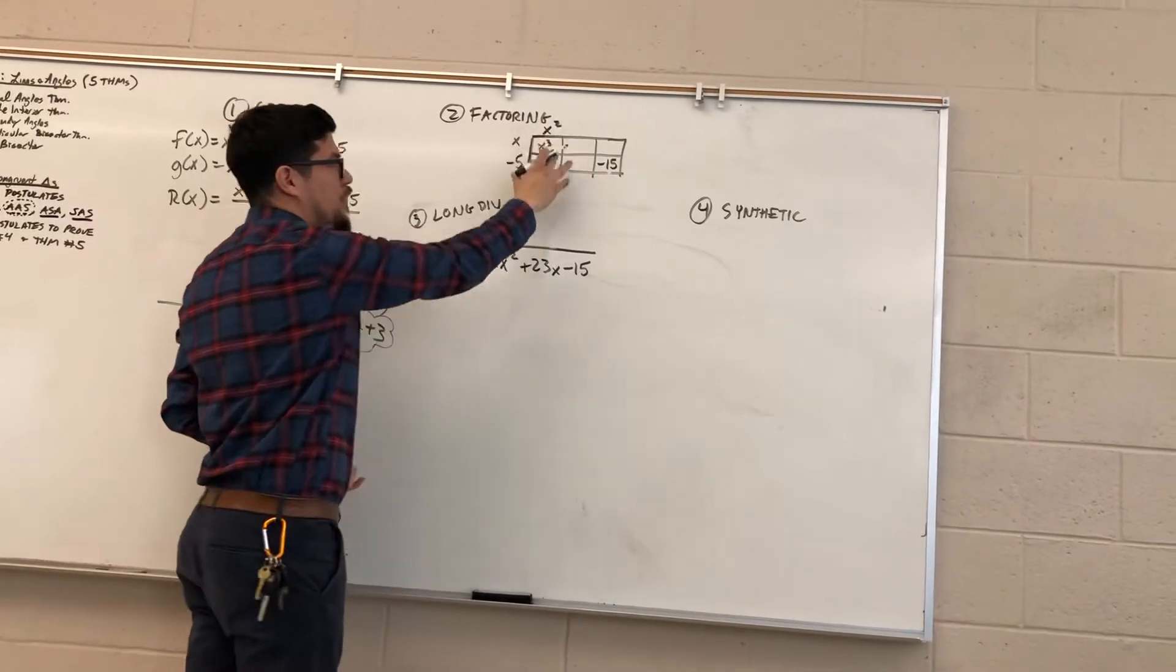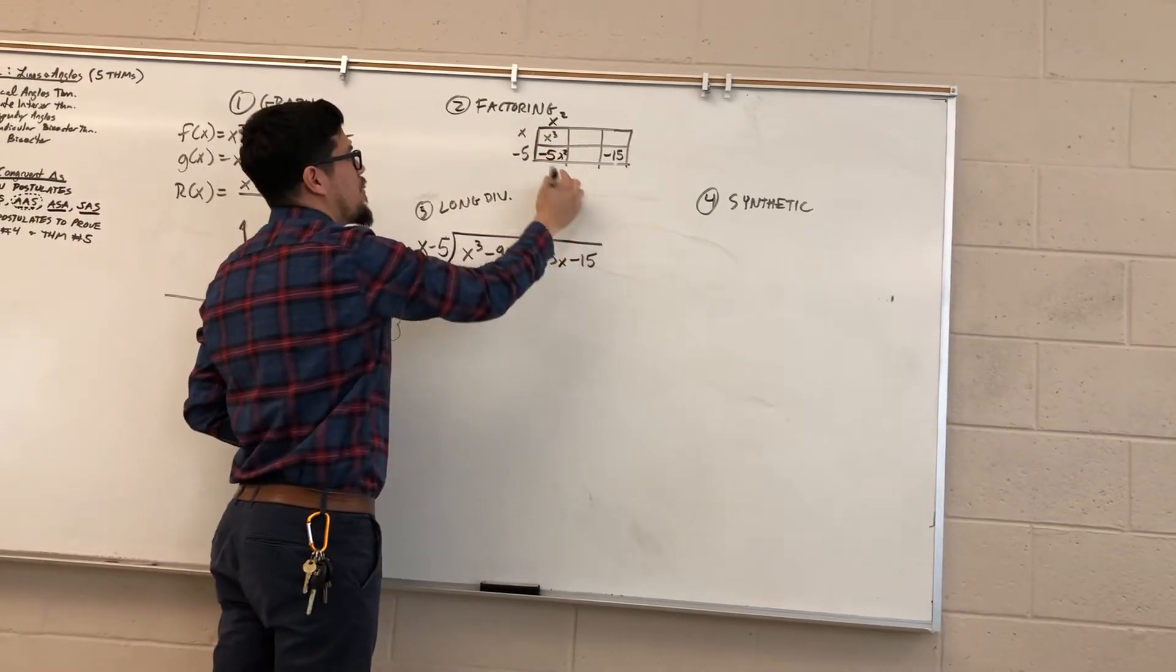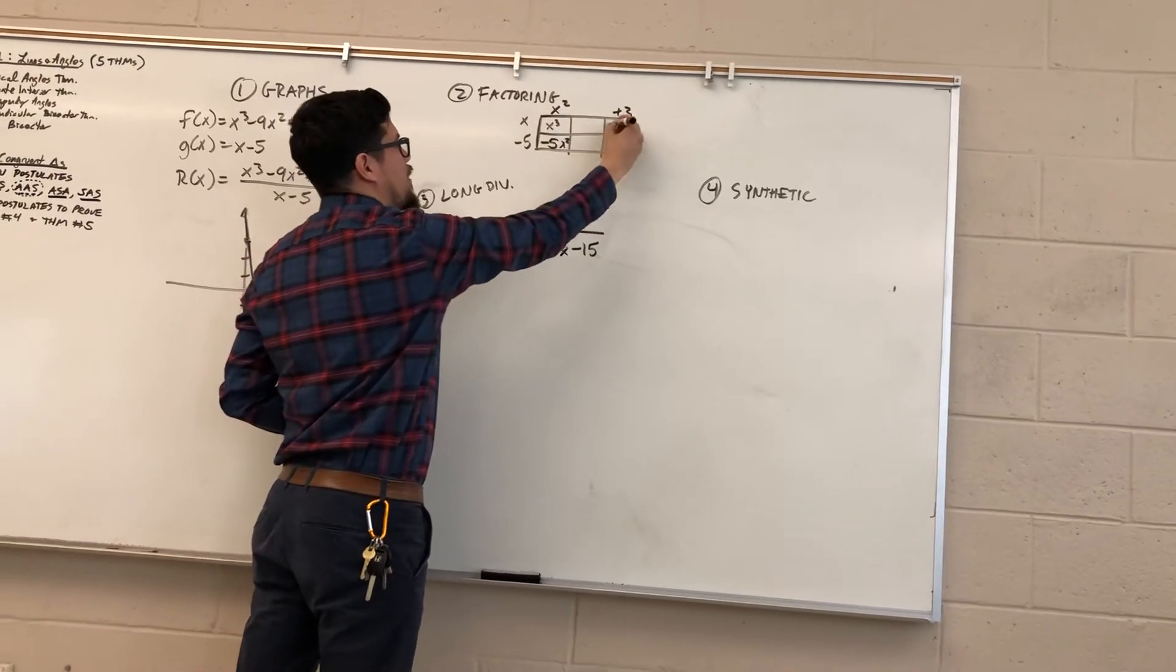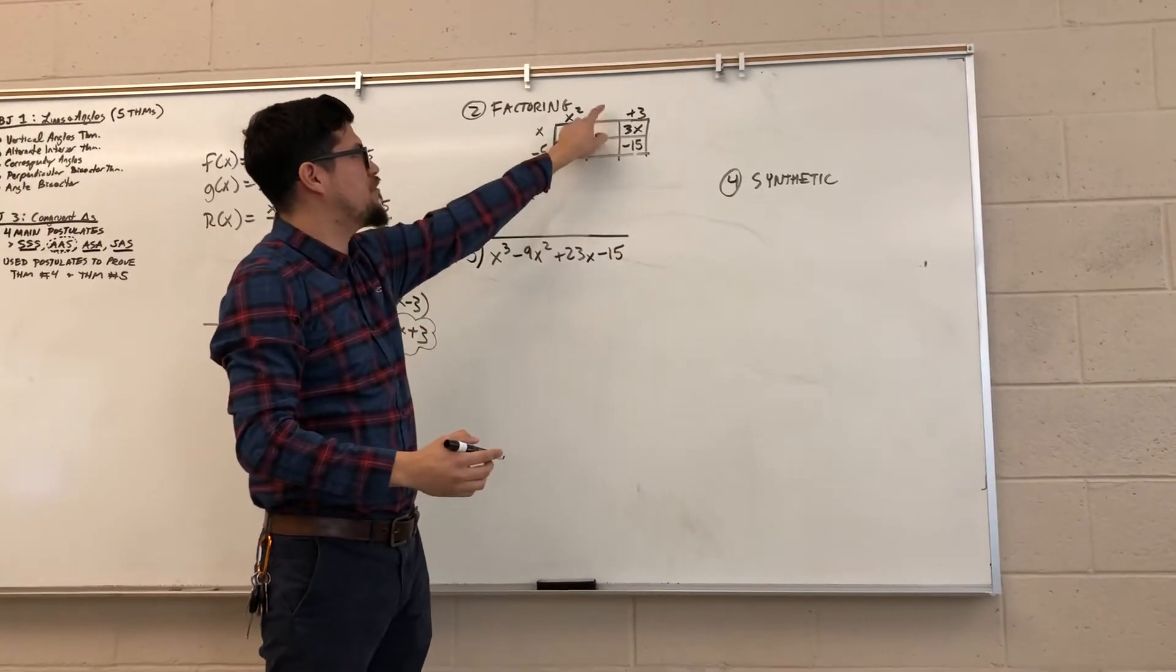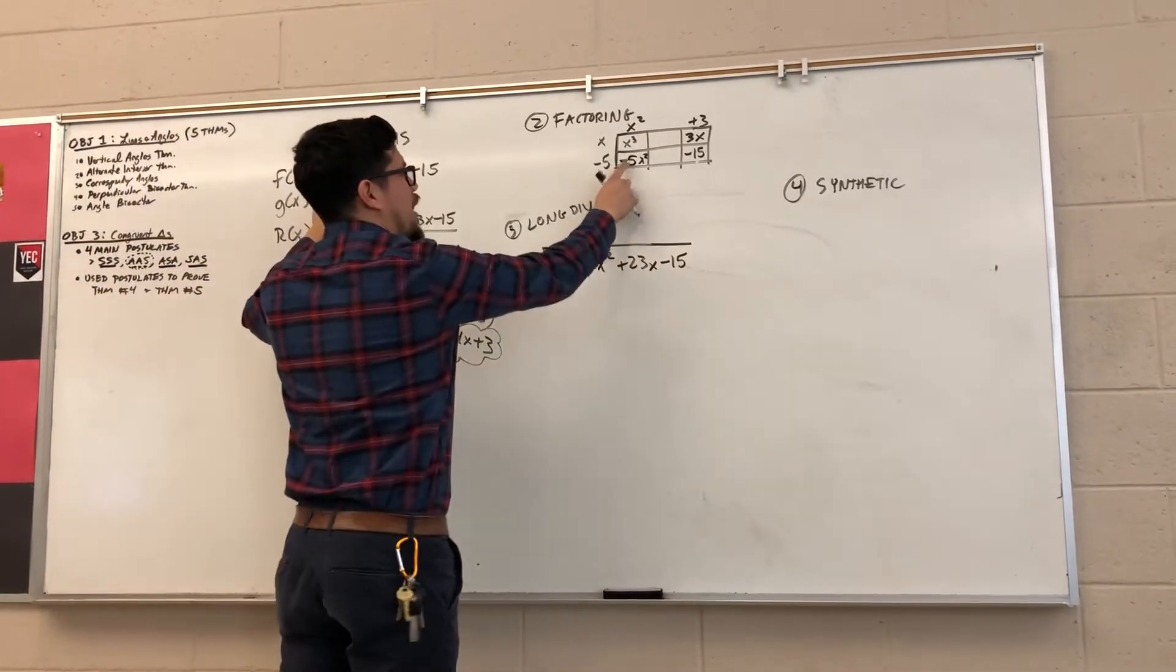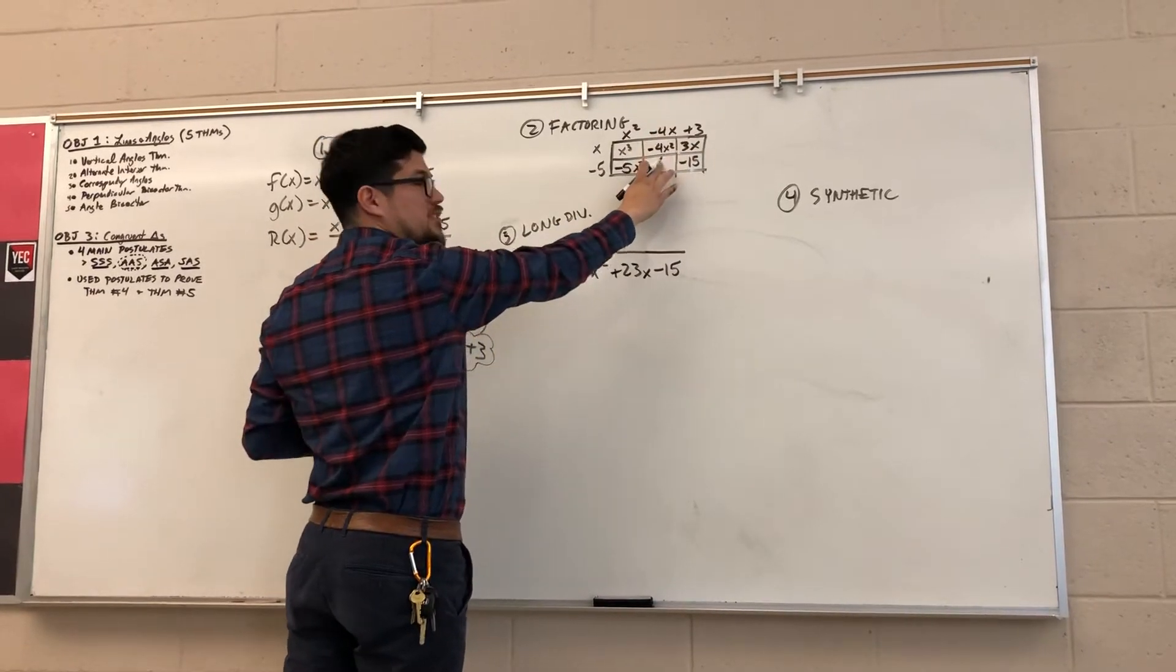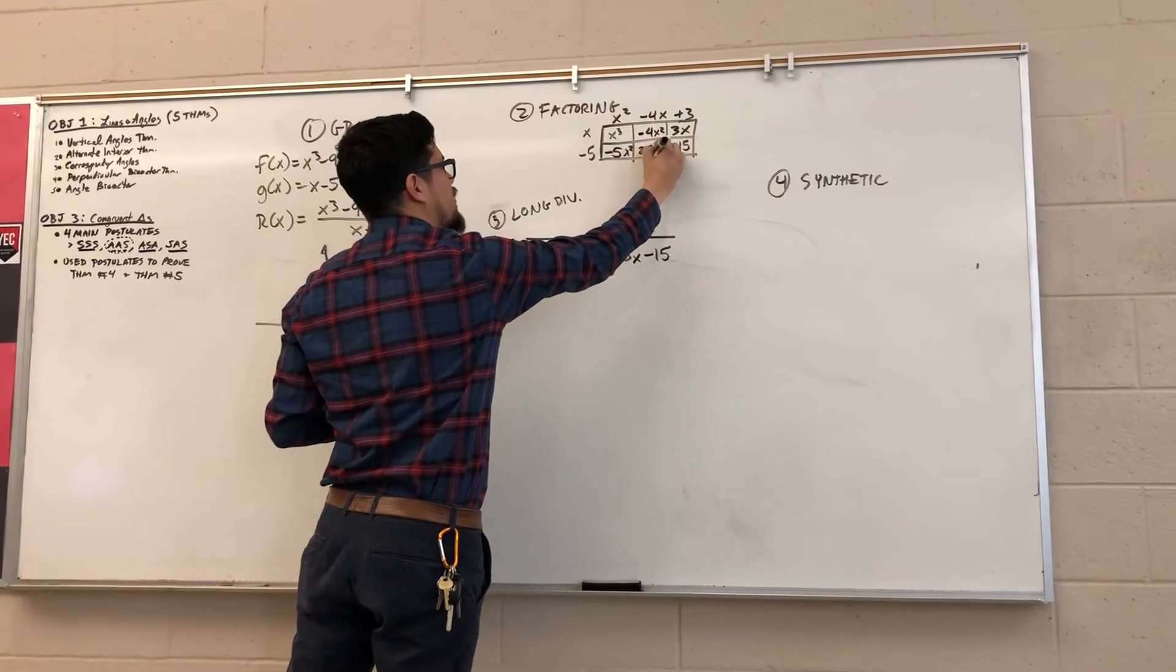Now if I have that, I can fill out a couple more things. x squared times negative 5 is negative 5x squared. I can fill out this character over here. What times negative 5 will give me negative 15? Positive 3. Positive 3 times x will give me 3x. Now I have to find these missing characters. If I end up needing negative 9x squared and I have negative 5x squared, that means that this guy must be negative 4x squared, which in turn would make this into a negative 4x. Negative 4x times negative 5 gives me positive 20x.